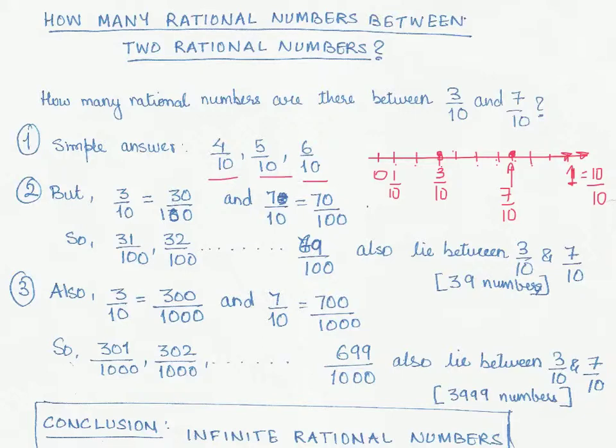You will say we can see 4 by 10, 5 by 10, 6 by 10. Straightforward answer: there are three rational numbers between 3 by 10 and 7 by 10.